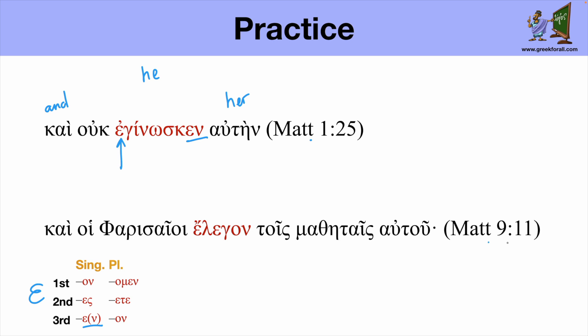The second example from Matthew chapter 9. So kai and hoi farisaioi this is our subject and the Pharisees. Elegon. Elegon again from our vocabulary. Lego, I speak. We see the augment before the word Lego. Right?